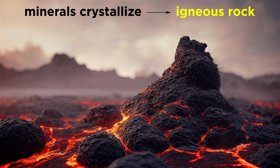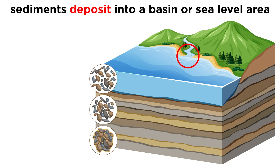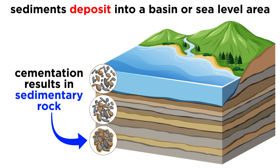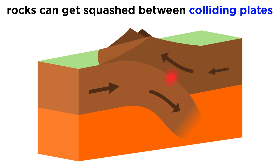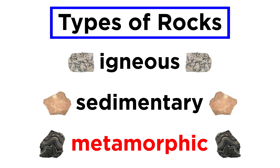In this series we have learned about how minerals crystallize from liquid-hot magma to form igneous rocks, which over time are uplifted, broken down into sediments, transported, and eventually deposited in a basin, where they are buried, compacted, and cemented to become sedimentary rock. In this tutorial we will discuss what happens when a sedimentary or igneous rock gets squashed in between two colliding plates, and the tremendous pressures and temperatures that result cause the original rock to recrystallize. We are of course talking about metamorphism, and this is the origin of our third and final type of rock, metamorphic rock.